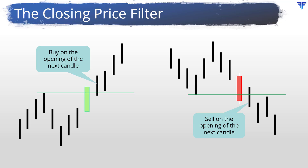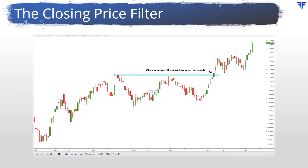However, the disadvantage is that one could miss out on a part of the move in case the price closes way above the resistance or way below the support. This chart shows an instance of a genuine resistance break. Here, see that we have a resistance zone rather than a resistance level, as the two prior highs occurred at slightly differing levels. Notice that the price closed above the resistance zone, increasing the probability of a successful resistance breakout.